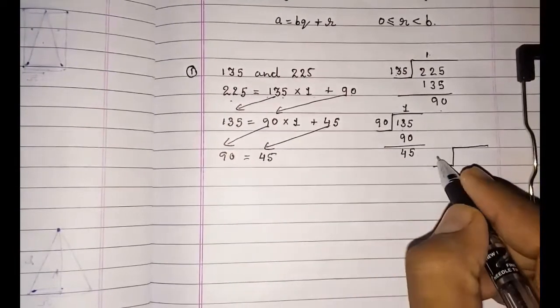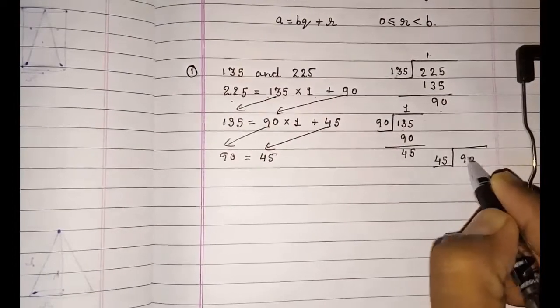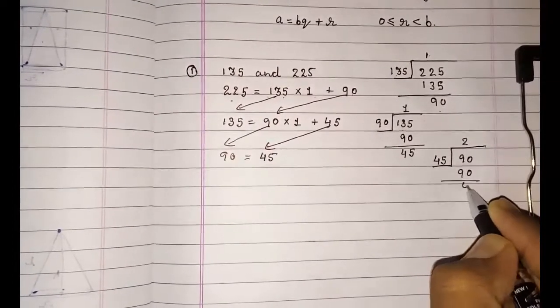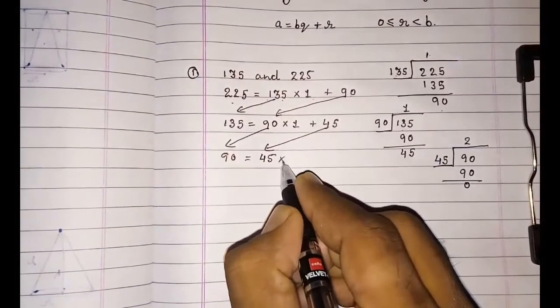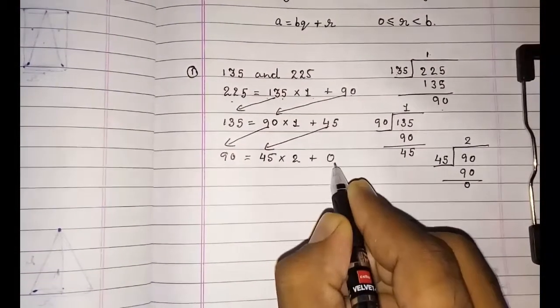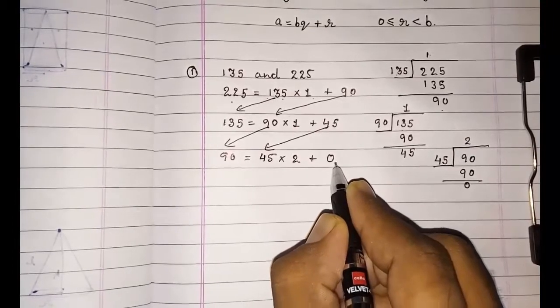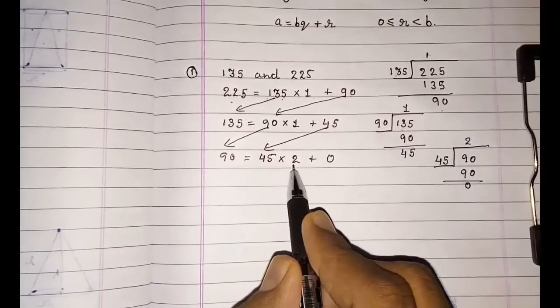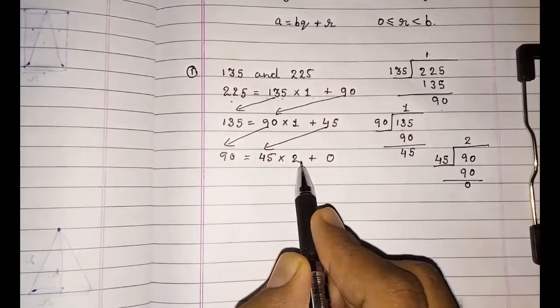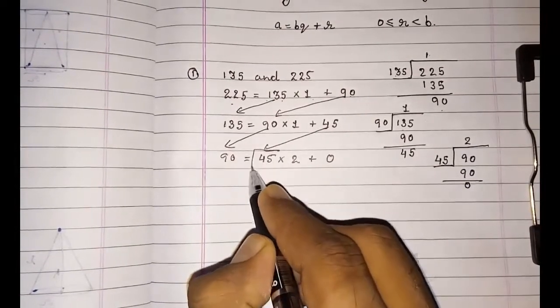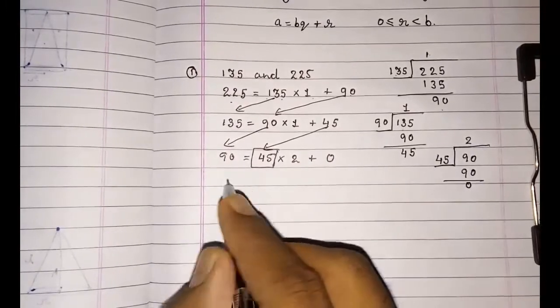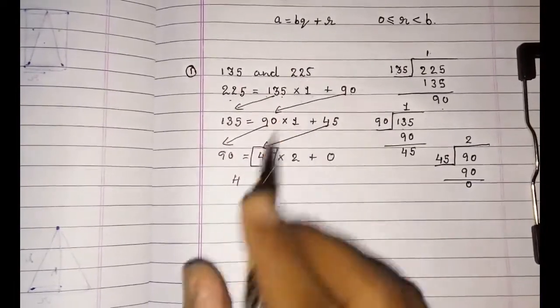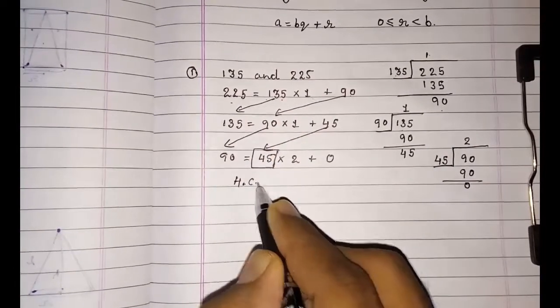Now divide: 45 into 90. 45 × 2 = 90, so the remainder will be 45 × 2 + 0. Now at the end when we are getting remainder 0, at that time we are getting the HCF. But generally what they are writing is 2 as the HCF, but that is wrong. What is your divisor, that will be your HCF. So HCF of 135 and 225 is 45.